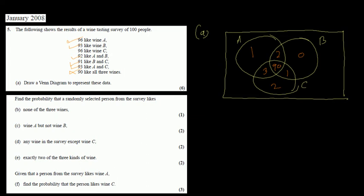The universal set has altogether 100 people. From 100, if we remove all the values — 1, 2, 0, 3, 90, 2, 1 — that totals 99. So 100 minus 99 gives 1 remaining outside all sets. This is the completed Venn diagram — we should also add the universal set symbol.